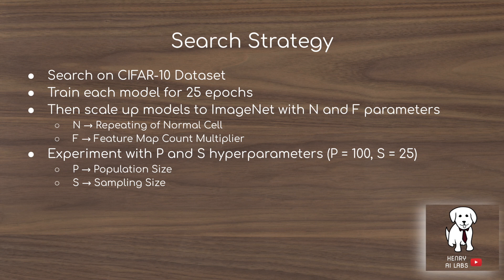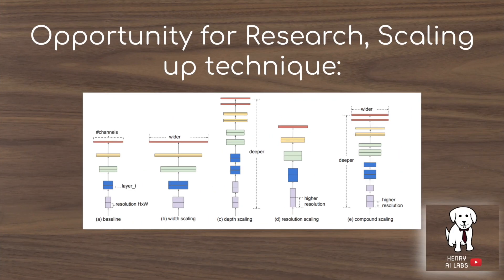F is the feature map count multiplier. The evolutionary algorithm hyperparameters are P (population size — how many model architectures are kept) and S (the tournament selection sample size — grabbing 25 models and having the best one produce a mutated child added to the population). One interesting opportunity is to look at more strategic scaling, like EfficientNet's technique of jointly weighting width, depth, and resolution scaling rather than just multiplying N and F.